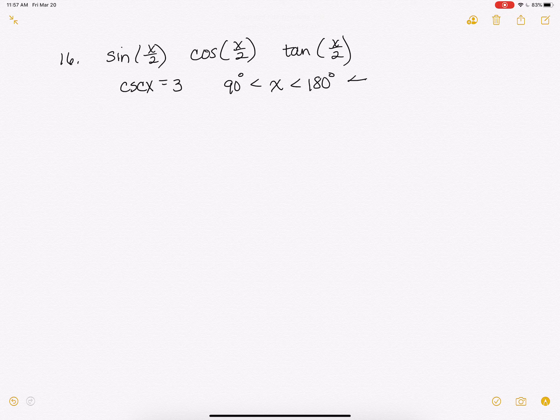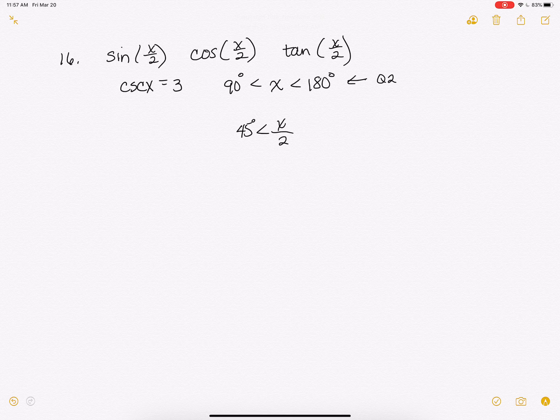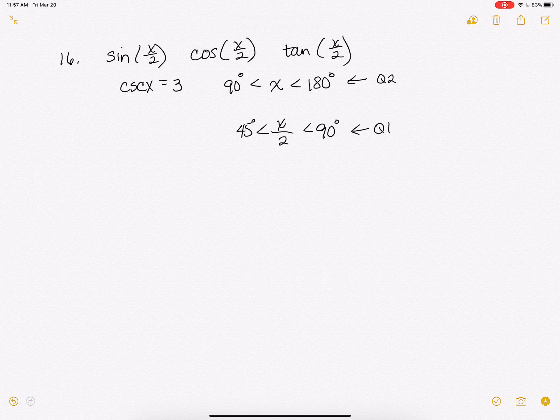So our angle is in quadrant 2, but our half angle is going to be between 45 and 90. So that's in quadrant 1 and that's going to be important when we're looking for our signs in our formulas, but this is going to be important in finding cosine of x and that's what I need to make sure you understand.